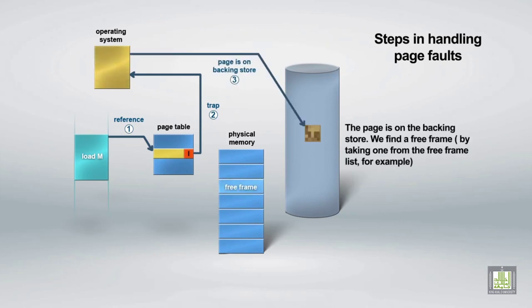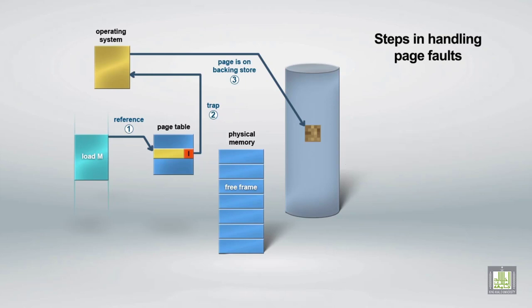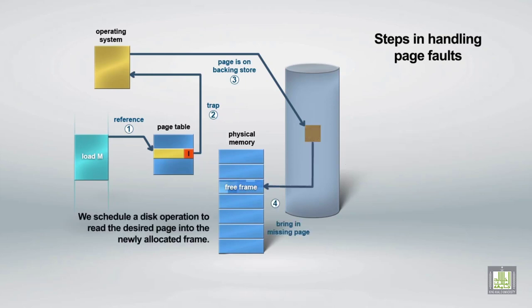For the pages on the backing store, we find a free frame by taking one from the free frame list. We then schedule a disk operation to read the desired page into the newly allocated frame.